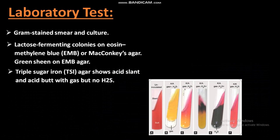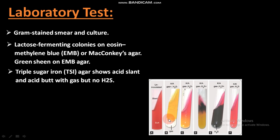Another procedure to identify E. coli bacteria is the triple sugar iron agar test. E. coli produces an acid slant and an acid butt with gas, but this gas is not H2S. In this way, they confirm that this bacteria is E. coli.